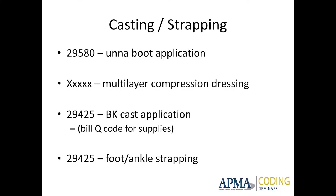29425 is BK cast application. If you're putting a cast on, there are Q codes — HCPCS codes — to describe the materials you're using: plaster for below-knee walking cast, fiberglass for below-knee walking cast. Bill those codes too because you get paid for the materials as well as the cast application. There's only one unit of those materials per application even if you use four rolls of fiberglass. 29425 is also foot and ankle strapping — your typical plantar fascial low-dye strap, J-strap for peroneal tendonitis, high-dye strap for Achilles tendonitis. Any of those fall under this code. There's another code for toe strapping too.